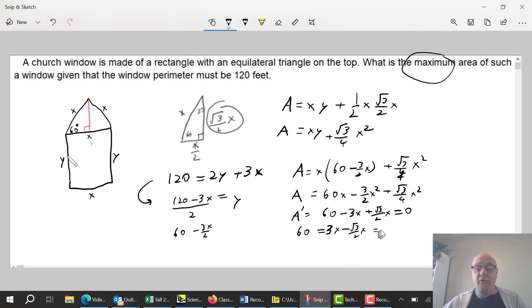Now let's factor that X, or let's do common denominator. This 3, let's think of this 3 as 6 over 2, so I could write this as 6 minus root 3 over 2 times X. So solving for X, I get X is equal to 120 all over 6 minus root 3.